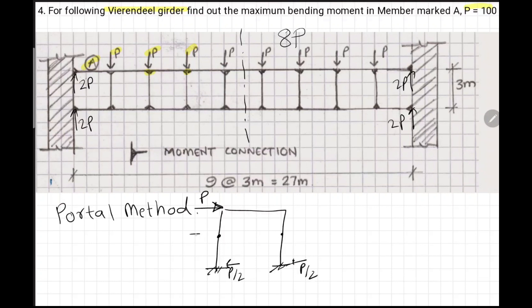The moment will be P times H over 4. We multiply force into lever arm. Same method we will apply here. We got force in this member 2P, and we have to find out moment.